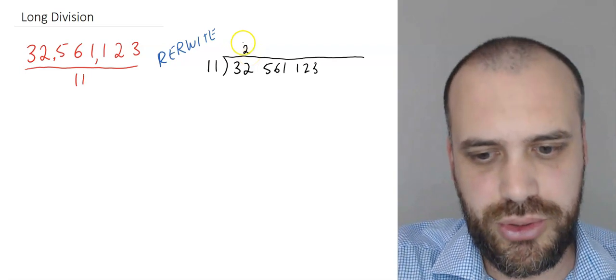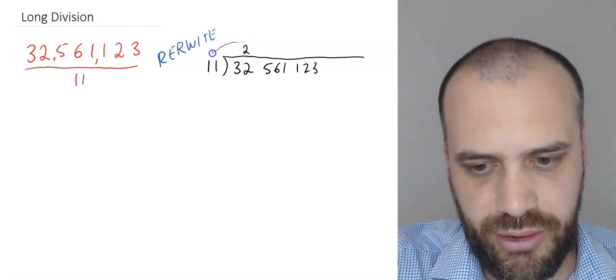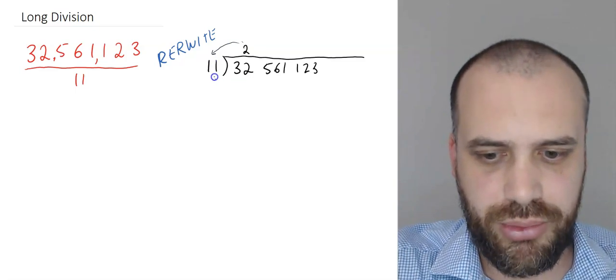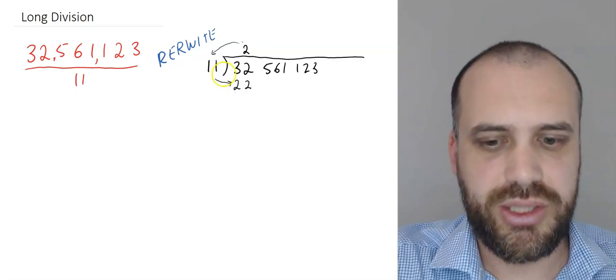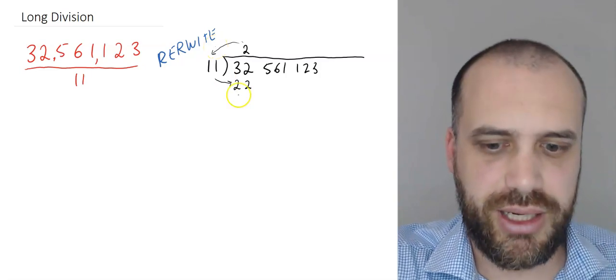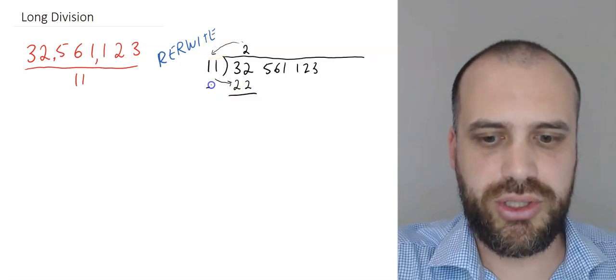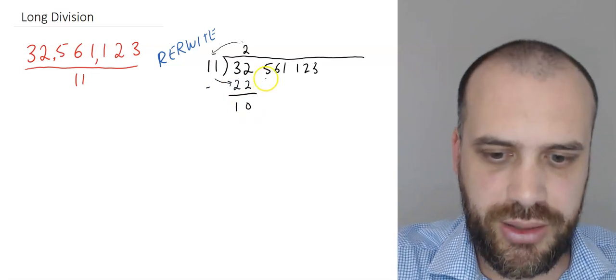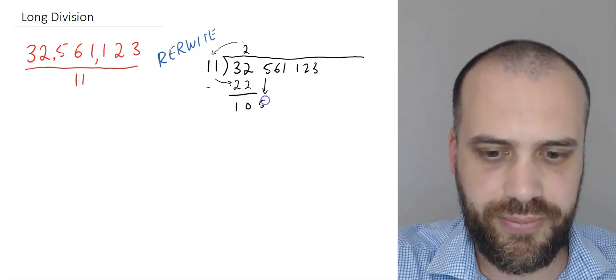2 times 11. Now I'm drawing a little arrow in here. 2 times 11 is 22, and we bring that down to there, 22. So you can see this sort of rhythm starting to happen. 32 minus 22 is 10. Bring the next thing down.